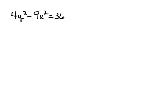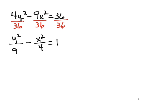So first, we want to write it in standard form, and to do that, we're going to divide each term by 36. So when we do that, this is going to reduce to y squared over 9 minus x squared over 4 equals 1.